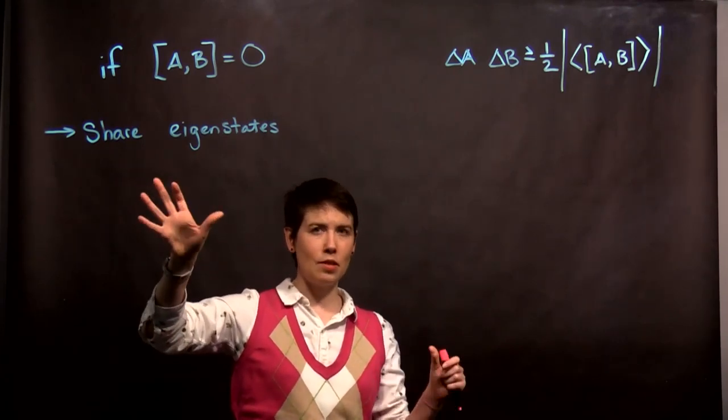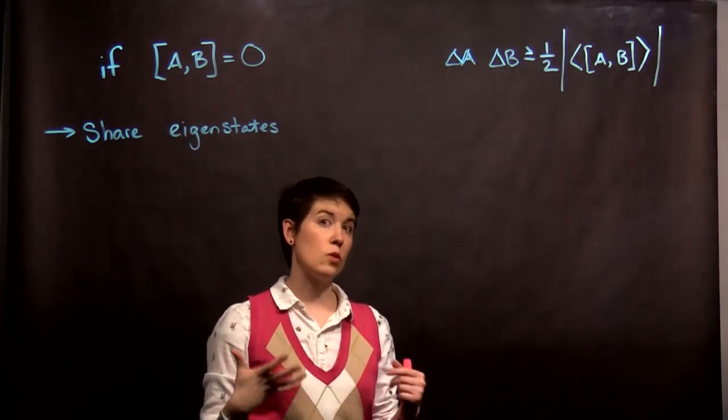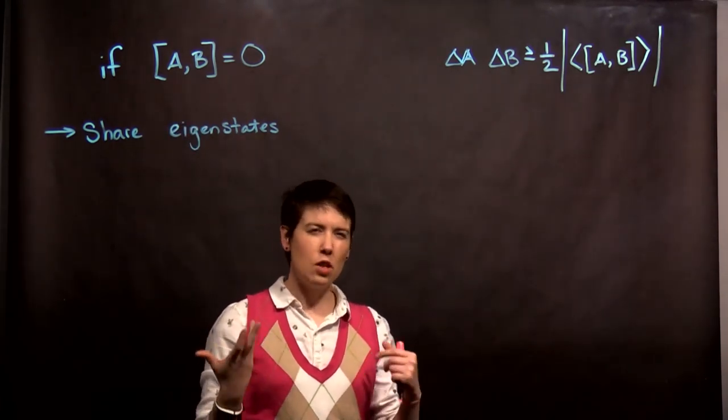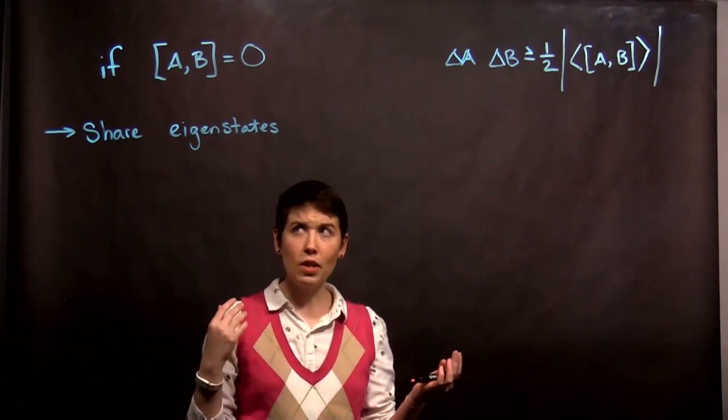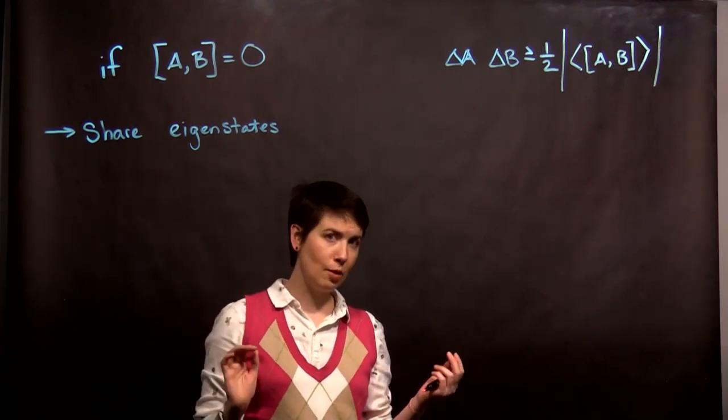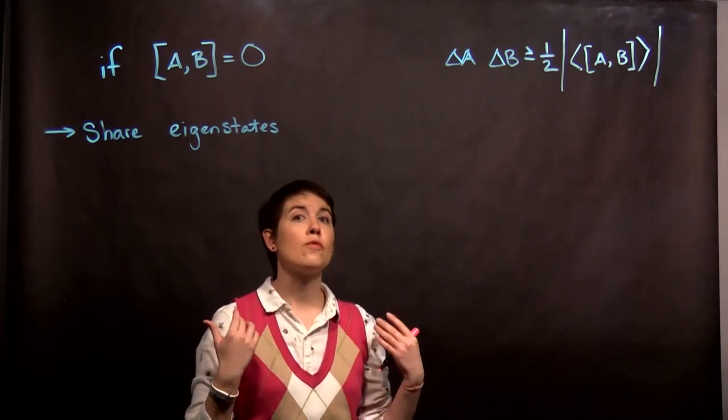So what that means, if they do share eigenstates, is that this commutation relationship is going to be zero. And another way of saying that is that they share a basis that they're diagonal in. Now, what's special about this is what this means for measurement.